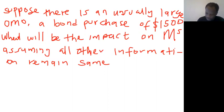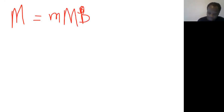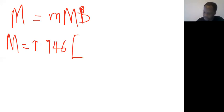We are looking at the impact on money supply, so M equals money multiplier multiplied by the monetary base. We know the money multiplier is a function of the ratios which remain the same, so M equals 1.946. The monetary base, the currency is still 800...